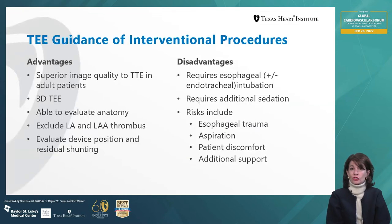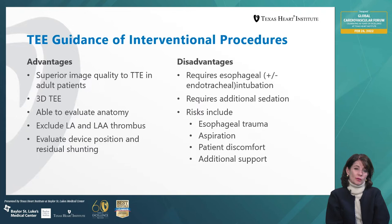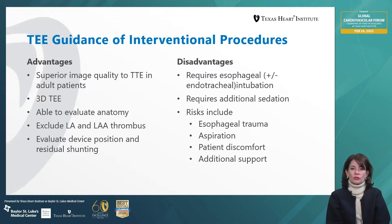During the interventional procedure, TEE is useful for guidance because of its advantages: superior image quality to transthoracic imaging, 3D techniques to evaluate the interatrial septum, anatomy evaluation, exclusion of thrombi, and assistance with device positioning and guidance. We can also assess for residual shunting at the end of the procedure. The disadvantage of TEE is that it requires esophageal intubation and additional sedation; risks include aspiration and esophageal trauma, which is quite rare and reported to be less than 1 in 3,000 intubations.